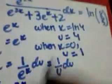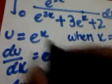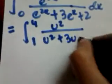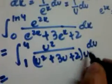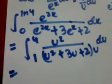Now we have replaced dx and the limits. We need to replace everything else. The upper limit ln 4 becomes 4, and the lower limit 0 becomes 1. Since e^x is u, e^(2x) is u squared. So the numerator becomes u squared, over u squared plus 3u plus 2, and dx becomes 1/u du. The u terms cancel out, giving us the simplified integral.